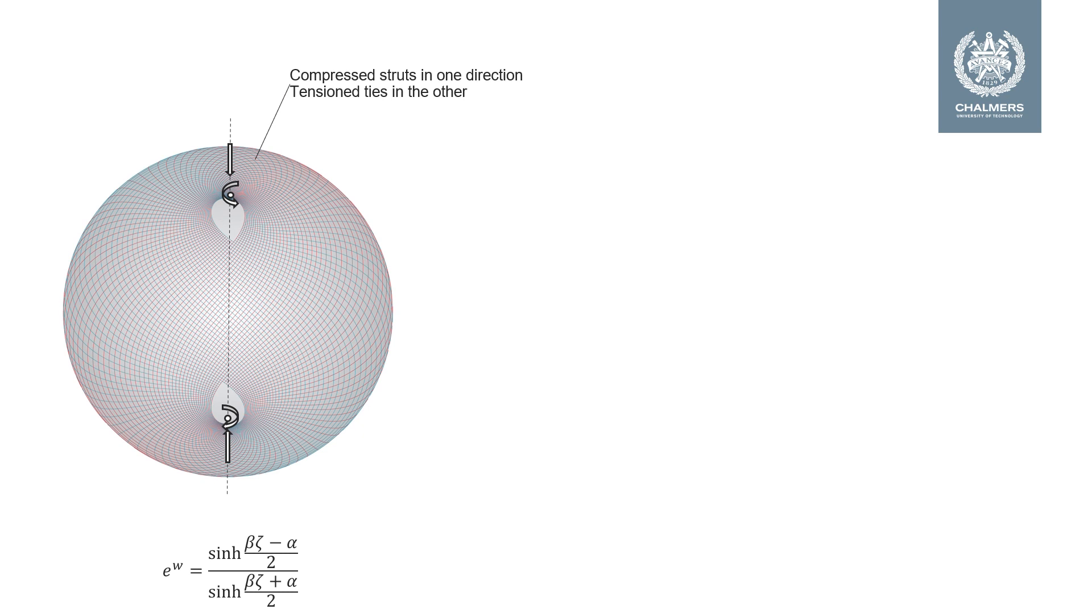But instead of a net of cables in tension, whose forces are proportional to the element length, as in the case with the minimal surface, we will on the Gauss map have a grid of struts in compression and ties in tension, whose forces are inversely proportional to the element length. So the shorter the member, the more force.